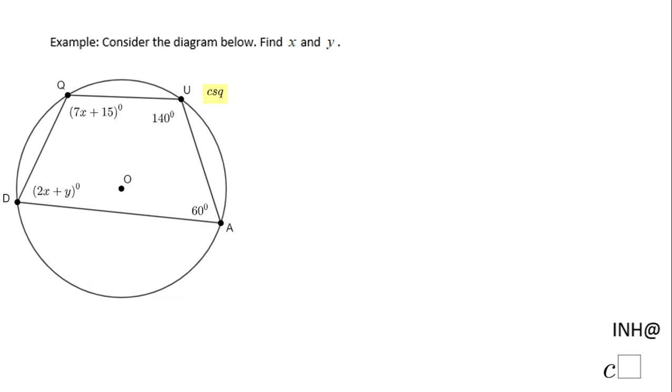Welcome back to C squared. In this example we have a circle and inside that circle we have a quadrilateral, a four-sided polygon, and we need to find x and y.